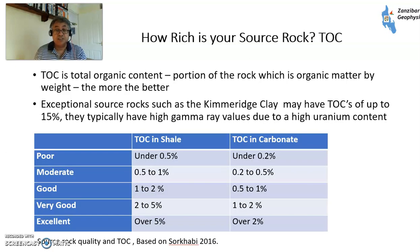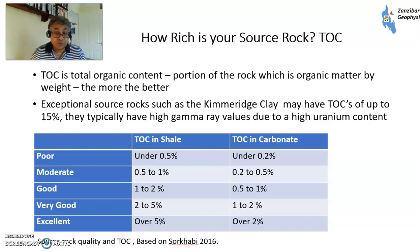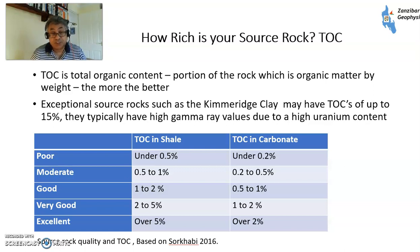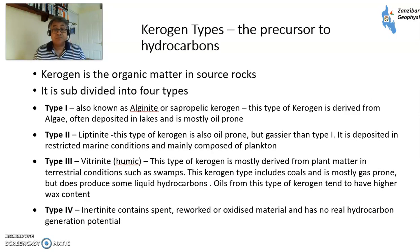The next question is how rich is your source rock? This is measured by Total Organic Content (TOC) — the proportion of the rock by weight made up of organic matter. Generally, the more the better. Exceptional source rocks such as the Kimmeridge Clay from the North Sea can have TOC of up to 15%, which is quite rare. Good source rocks tend to be between 2 and 5%. High TOC source rocks tend to have very high gamma-ray values due to high uranium content — a big spike on the gamma-ray, up to over 150 units.